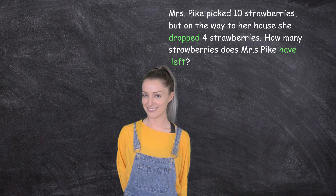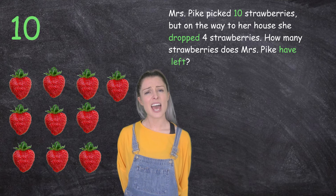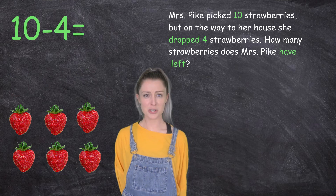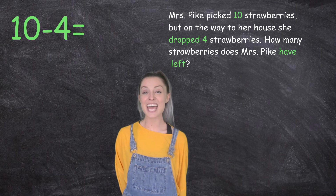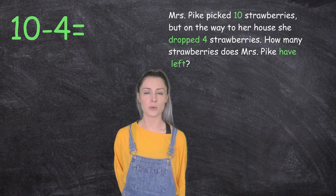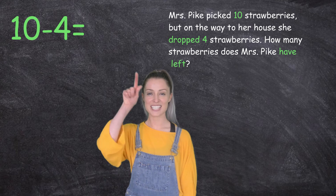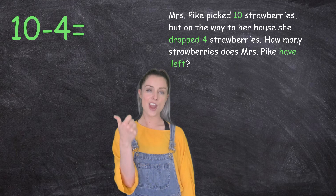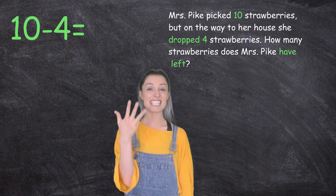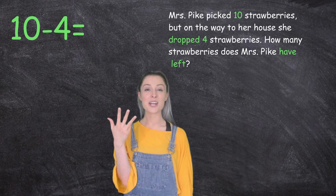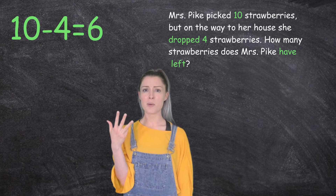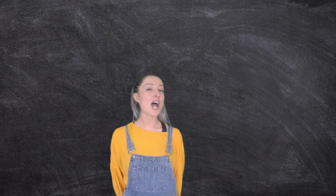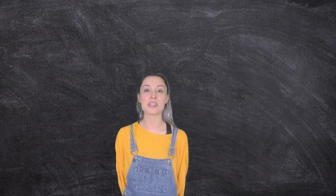So how many did she have to start with? The whole number is ten — great work! And how many are we subtracting? Four, because she dropped four on the ground. So it's ten take away four equals. I'm going to lock it in again: starting at ten and counting down four — ten, nine, eight, seven, six — so ten take away four equals six. Mrs. Pike still has six strawberries.